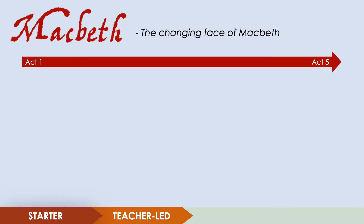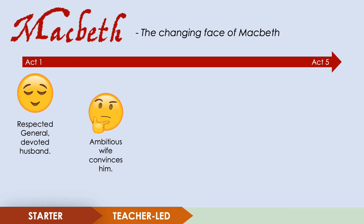Now let's look at how Macbeth changes over the course of the play. In Act 1, Macbeth is a respected general, a devoted husband, and the king is very pleased with his actions in battle. His ambitious wife Lady Macbeth then convinces him to kill King Duncan. An audience at this time would have considered Macbeth a weak character as he has allowed himself to be influenced by a woman, so his character would be disliked as he is not conforming to the stereotype of a strong man.